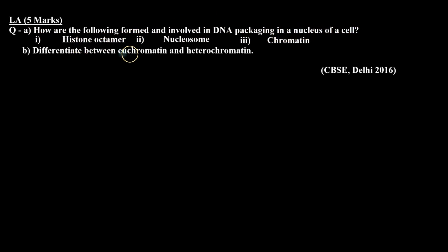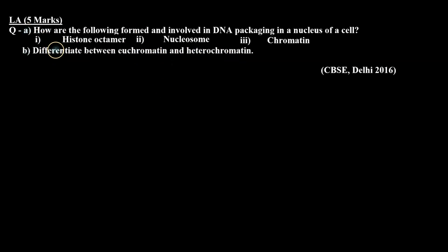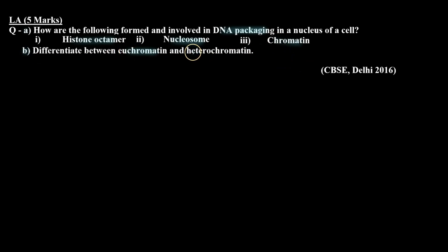First: histone octamer. Second: nucleosome. And third: chromatin. Then B part: differentiate between euchromatin and heterochromatin. So in A part, histone octamer, nucleosome, and chromatin are involved in the packaging of DNA, and in B part, euchromatin and heterochromatin are involved. Let's check the answer.